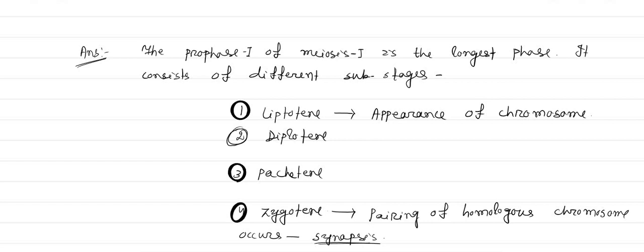You get the answer here. The option number, sorry, zygotene is the correct option. In which stage synapses occurs - synapses means pairing of homologous chromosomes occurs so that it leads to recombination, crossing over and recombination.